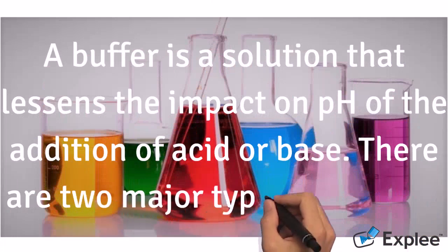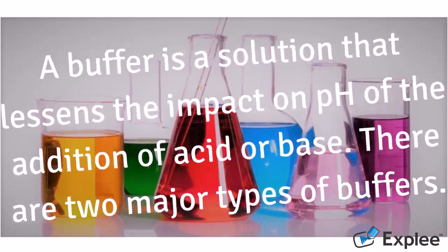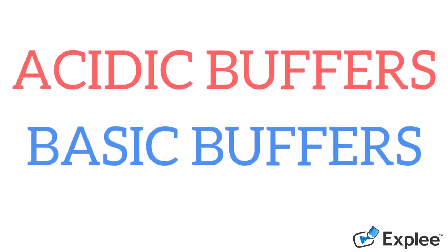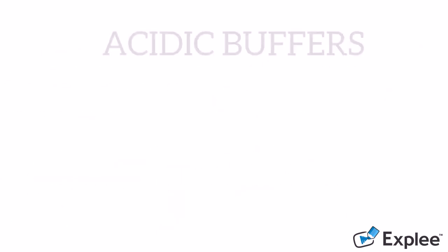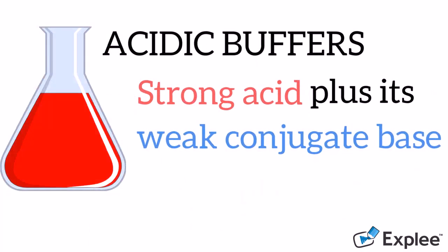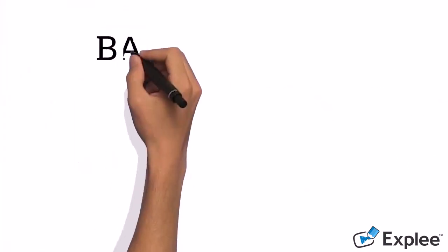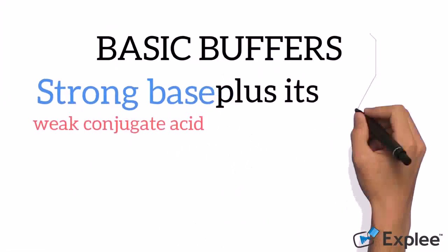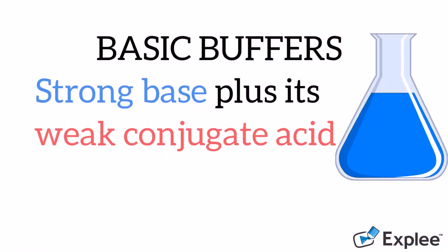There are two major types of buffers: acidic buffers and basic buffers. Acidic buffers are combinations of strong acids and their weak conjugate bases. Their pH is less than 7. Basic buffers are solutions of strong bases and their weak conjugate acids. Their pH is greater than 7.